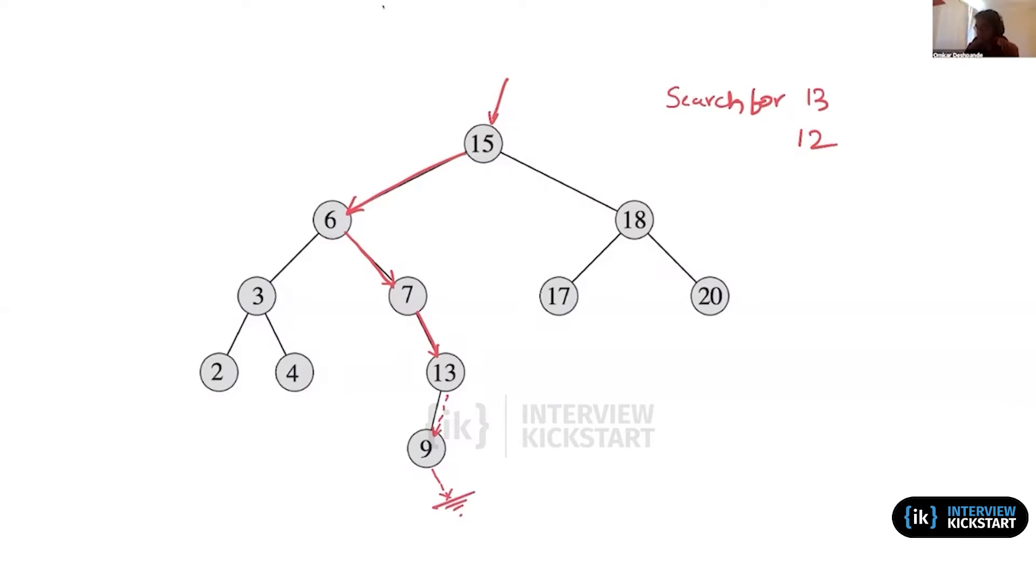But since it's null, we would have detected that 12 does not exist. So the path that we are following when implementing search is basically a path whose length in the worst case is proportional to the height of the tree.